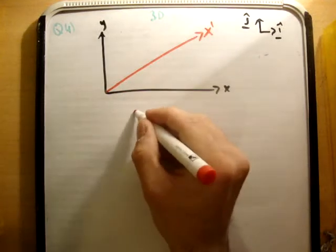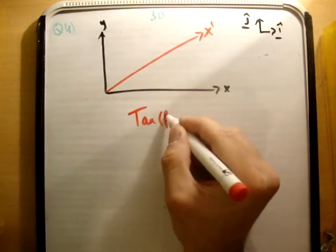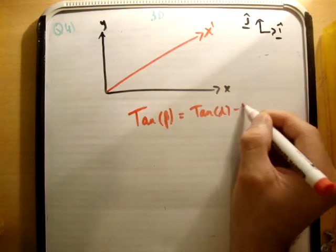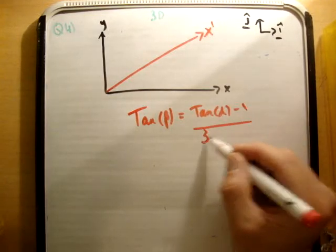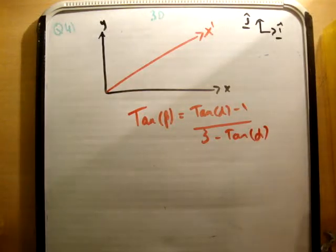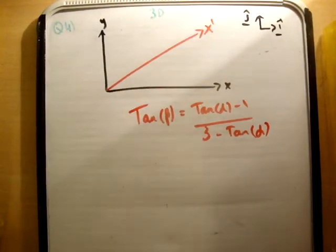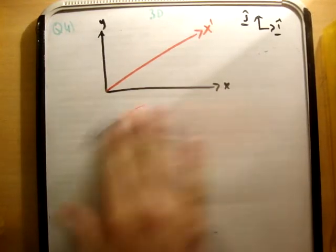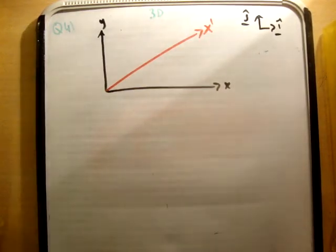We've already done a question previously where it says prove that tan beta is equal to tan of alpha minus 1 over 3 minus tan alpha. Now for that reason, this is a continuation on. However, the next three parts need to be done differently in a completely different way. So it is actually pretty much a separate question.